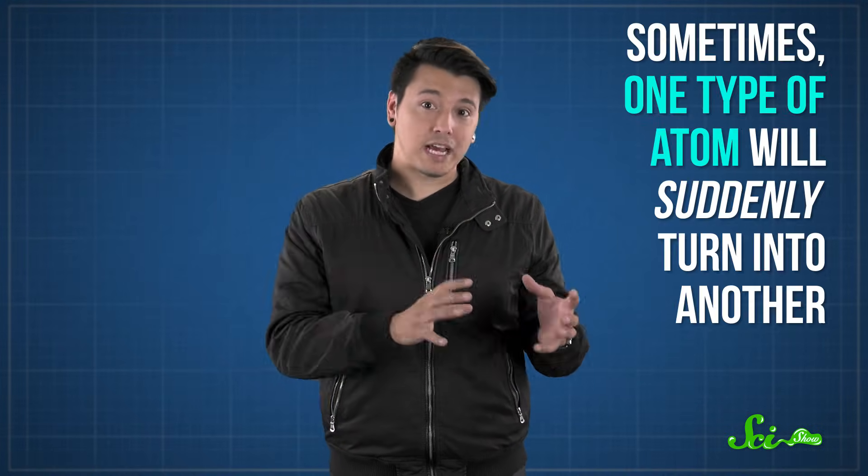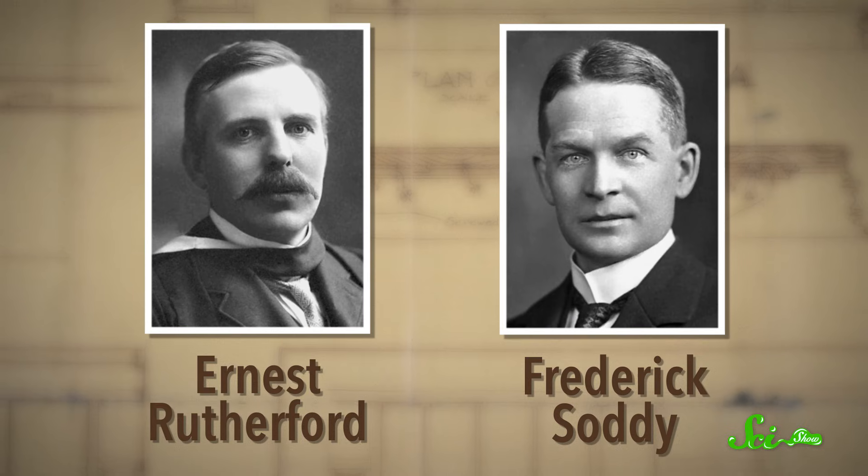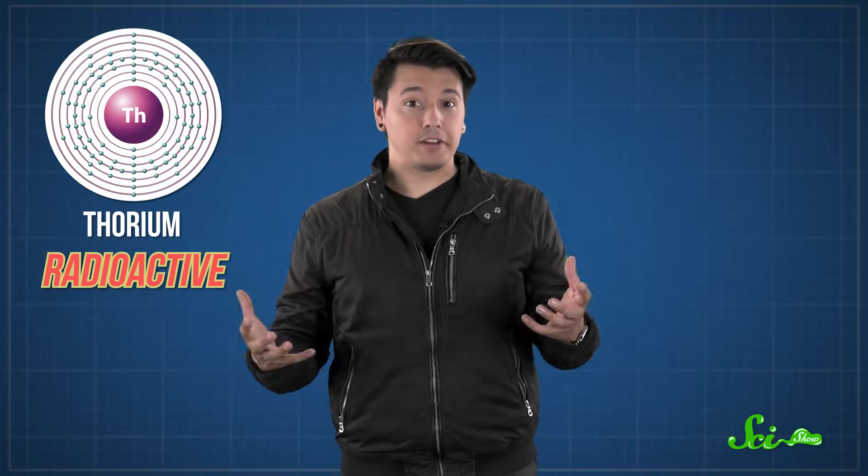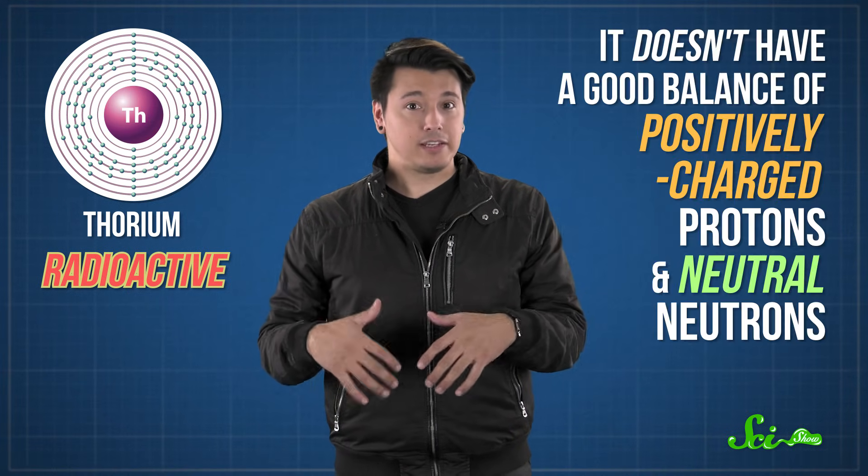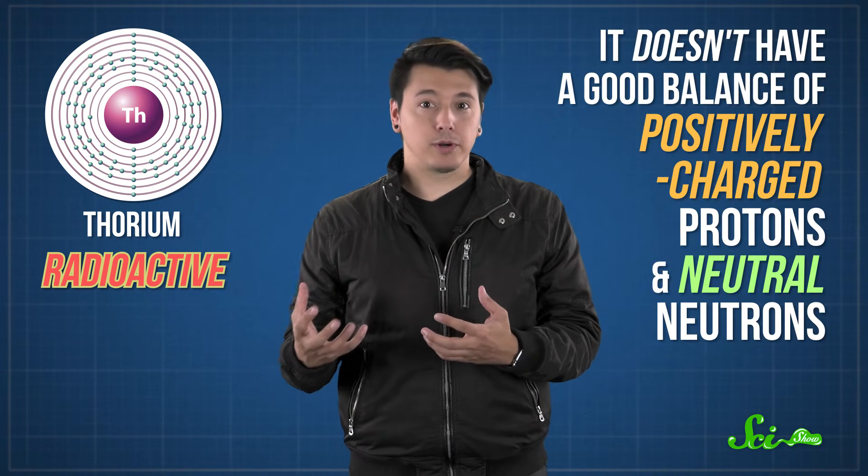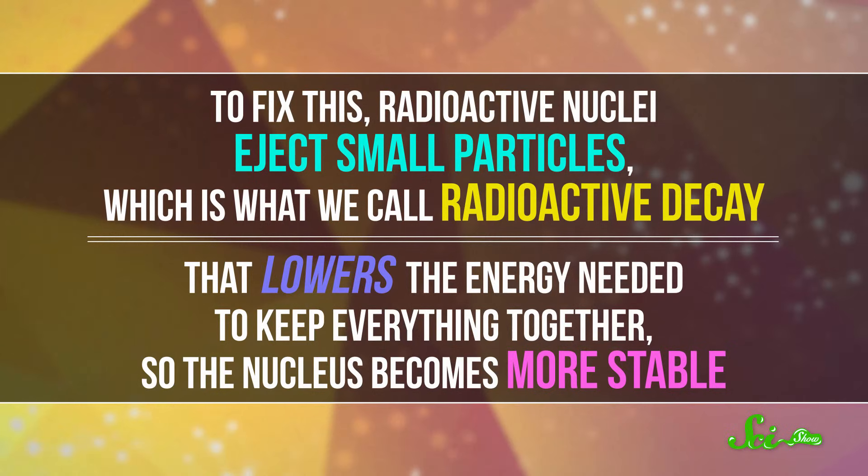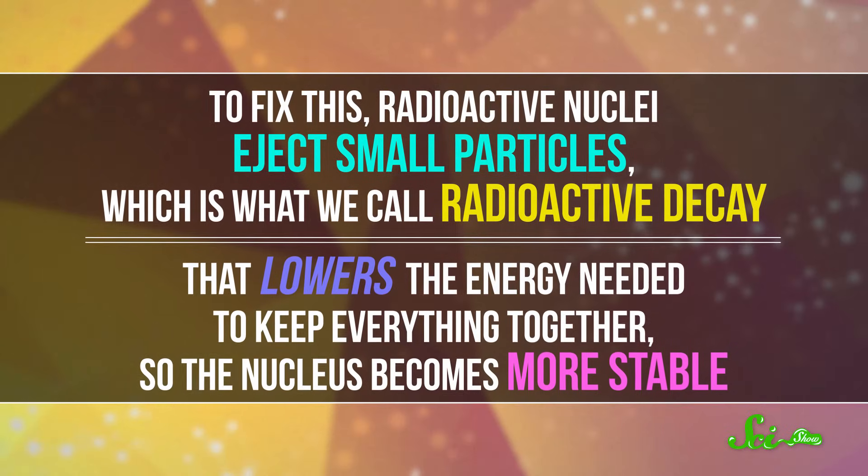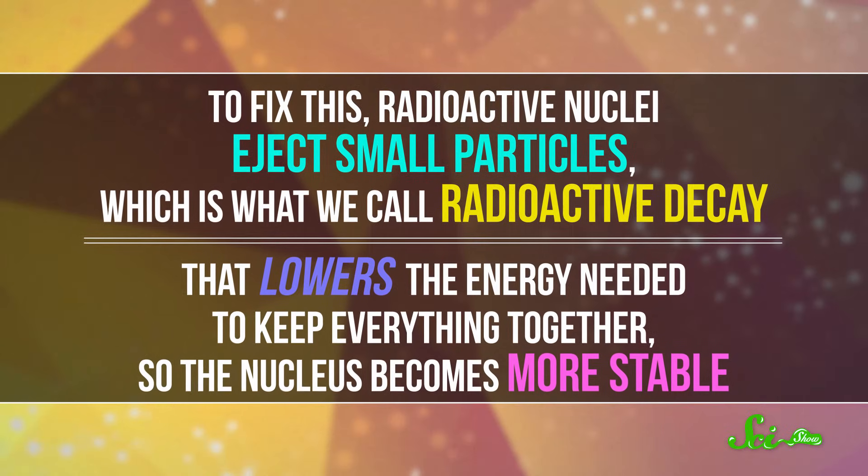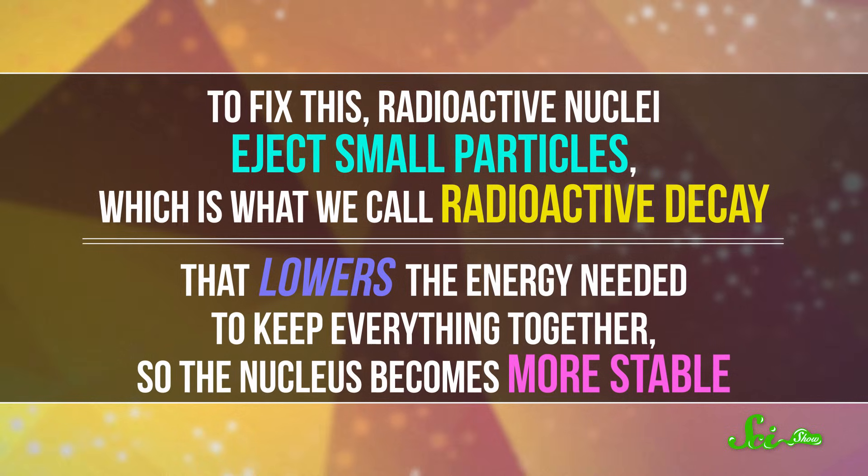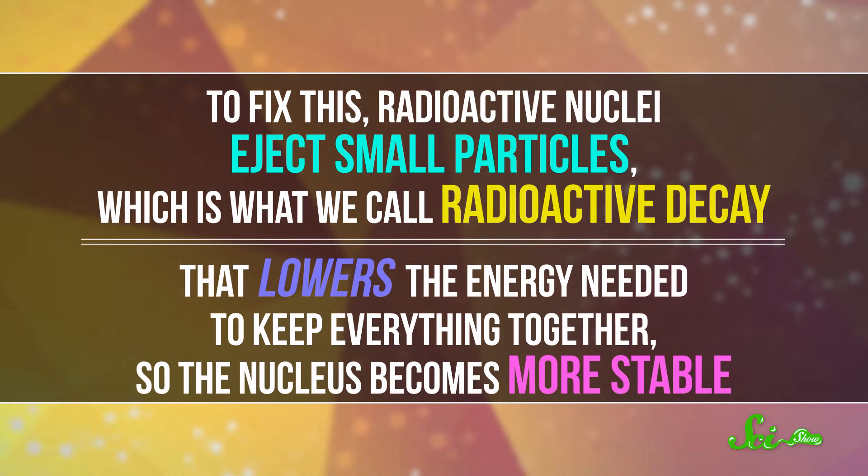In the early 20th century, scientists discovered that sometimes, one type of atom will suddenly turn into another. In 1903, physicists Ernest Rutherford and Frederick Soddy noticed that some thorium in their lab had converted itself into radium. We now know that it's because thorium is radioactive, meaning its nucleus is unstable. It doesn't have a good balance of positively charged protons and neutral neutrons. To fix this, radioactive nuclei eject small particles, which is what we call radioactive decay. That lowers the energy needed to keep everything together, so the nucleus becomes more stable.